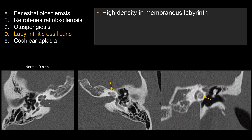If you compare it to the right side where the inner ear structures should be lucent, on the abnormal left side you can see the cochlea has abnormal density inside. The posterior semicircular canal also looks abnormally dense. On the coronal view, you see the spiral-shaped or snail-shaped cochlea is abnormally dense. That's the hallmark for labyrinthitis ossificans.